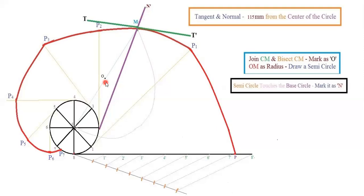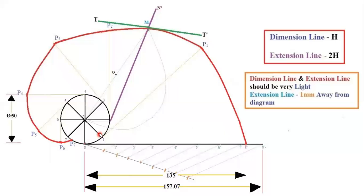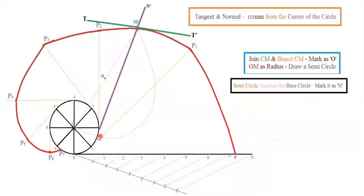Take your compass with radius O to M, place the compass at center O, and draw a semi-circle. That semi-circle will cut the base circle at a point — mark that point as N and join N to M. Extend the line and name the extension N-dash. So N–N-dash is your normal.